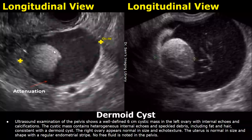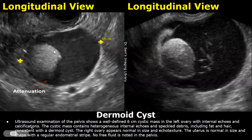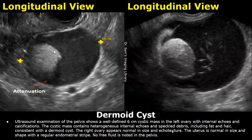Here is the case of dermoid cyst and its report. In the findings, you can write a well-defined cystic mass and then its location, followed by the presence of internal echoes and calcifications. The cystic mass contains heterogeneous internal echoes and speckled debris indicating fat and hair, consistent with a dermoid cyst. Then you can write about the appearance of the other ovary, the uterus, the endometrium, and the presence or absence of free fluid in the pelvis.